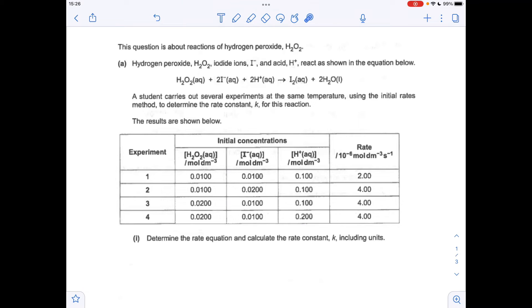The first part of the question is a rate question. We've got to determine the rate equation, calculate the rate constant k with units. The first thing I'm going to do is use the data in the table to work out the order of reaction for the three reactants. That will get us the rate equation, and then we'll take it from there.